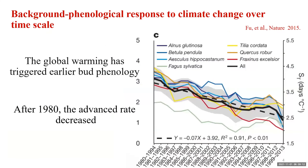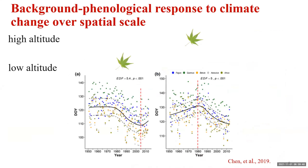Many studies have explored the phenological response to climate change. For example, over time, studies found that global warming has triggered earlier bud phenology. However, after 1988, the rate of advancement decreased because bud phenology started to have lower sensitivity to increasing temperature. Studies have also found that climate change has synchronized bud phenology along different latitudes, with different impacts on species distribution and carbon fixation.